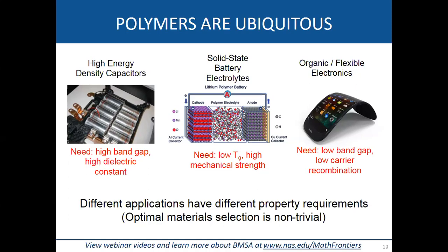Regardless of what age we are in, there are a lot of polymers around us with many different applications. Here are three classic applications. The first deals with energy storage — if you're driving an electric or hybrid car, you're likely using a large capacitor bank that uses polymers to store electrostatic energy. The second is batteries, and the third is organic or flexible electronics.